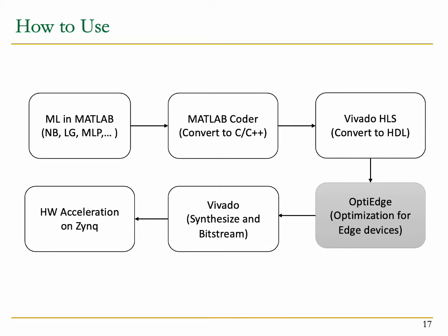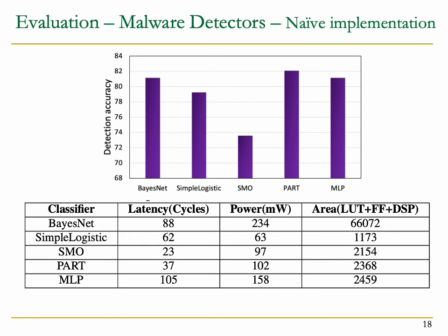Based on the recommendation of OptiEdge, the Vivado tool can be used to synthesize the RTL code of the ML model to hardware and generate a bitstream. Our selected machine learning classifiers for malware detection include BayesNet, Simple Logistic, Multilayer Perceptron, PART, and Sequential Minimal Optimization. The rationale for selecting these models is that they come from different branches of machine learning, and the prediction models they produce are binary classifiers compatible with the attack detection problem.